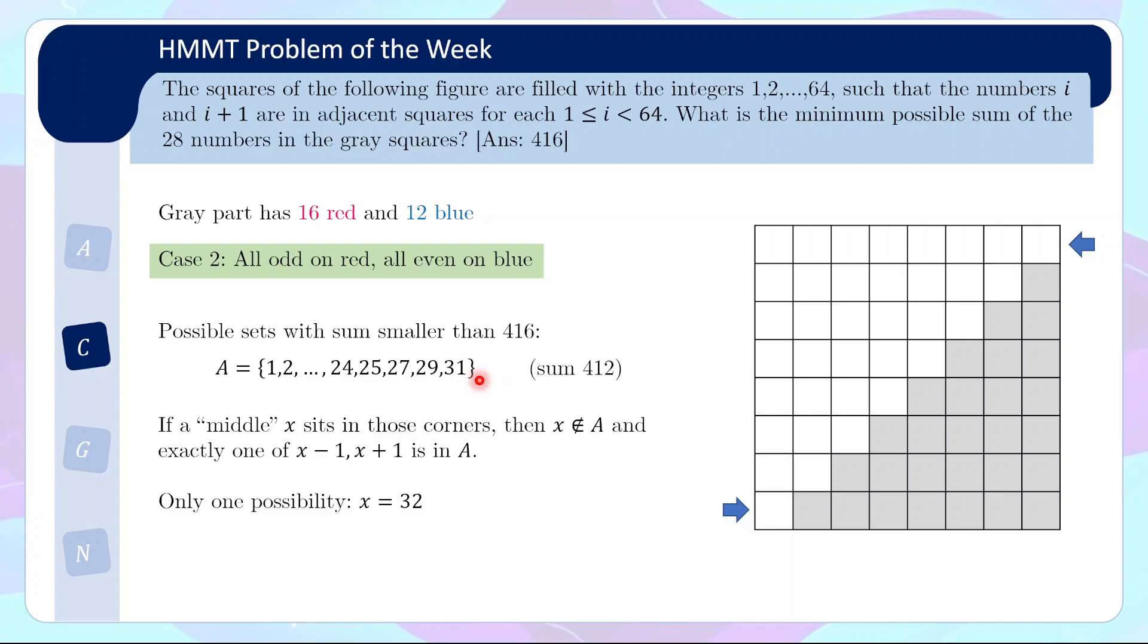So only one possibility for a middle x, which means that actually the other corner must contain either 1 or 64, and of course 1 we want it to be inside the grey square, so this other corner must be 64. So one of the corners will be 32, the other corner must be 64. That really binds down the possibilities.